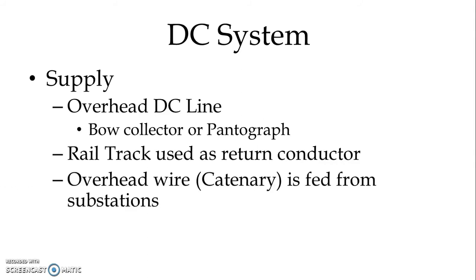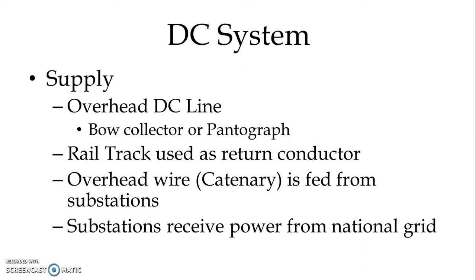The overhead wire, known as a catenary, is fed from substations at different intervals, and the substations receive power from the national grid. The spacing between substations depends on the operative voltage.